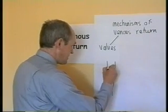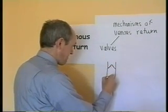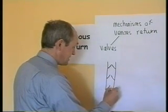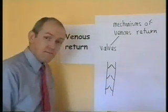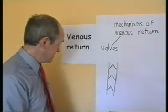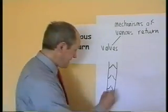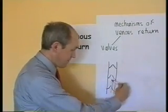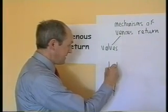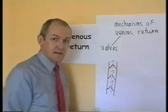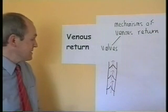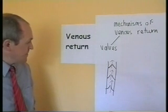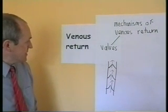The valves will be pointing up in this direction. It's a bit like a ladder, really. If the blood is able to get from one level to the next, the valve will close and stop the blood flowing back again. And it can get from there to there, and there to there, and so on — a ladder that the blood can climb up. So, veins have valves.